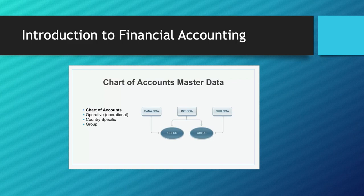The country-specific COA is generated to meet each country's requirements. For example, both the US account and Germany account use GBA as the US International COA, which is INT. At the same time, they also maintain their own COA with CA and OGKR.